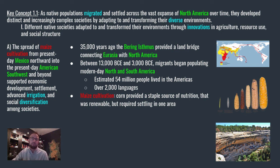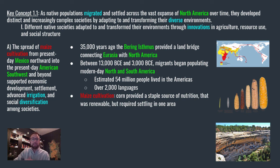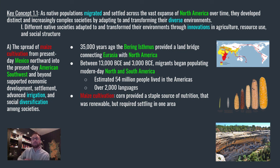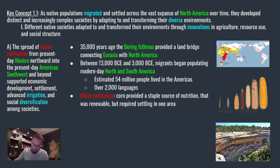Maize is just a fancy word for corn, and it was the staple form of nutrition within North America. It was a renewable source of energy — they would grow it, pick it, plant it next season, grow it again. Corn has a lot of carbs and a lot of nutrients, and that enabled societies that might have struggled to even subsist before to start developing into larger civilizations as time went on.